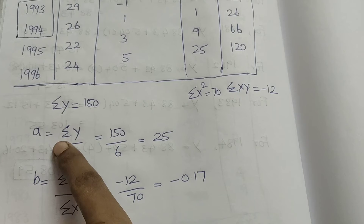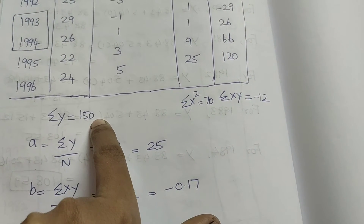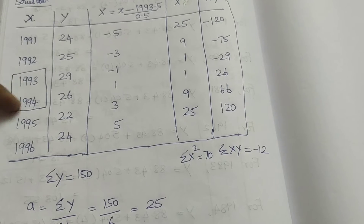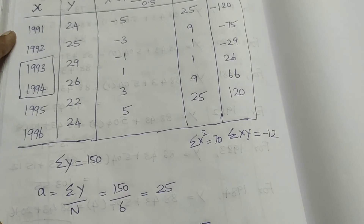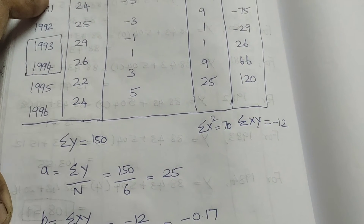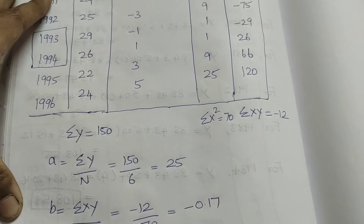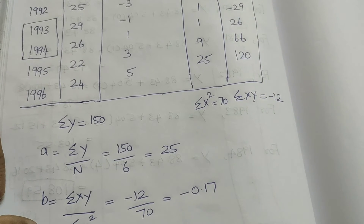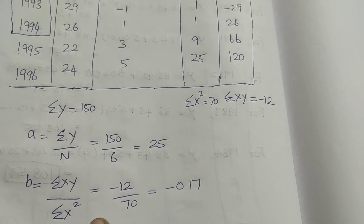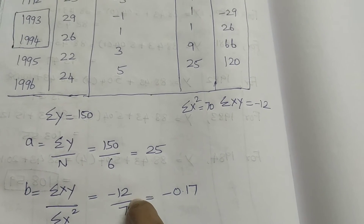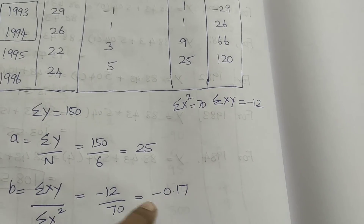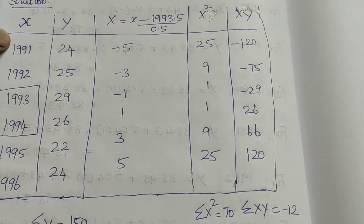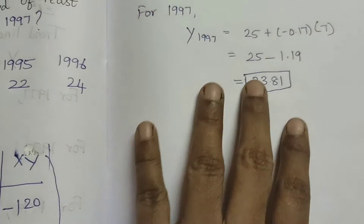The trend line equation is Y = a + bX. We know the formula: a = ΣY / N = 150 / 6 = 25. For b = ΣXY / ΣX² = -12 / 70 = -0.17. Now we can obtain the trend values.